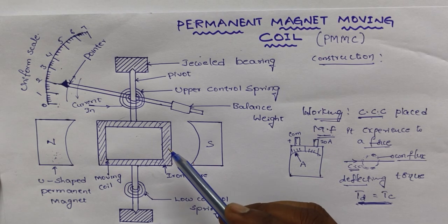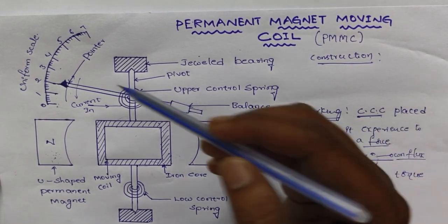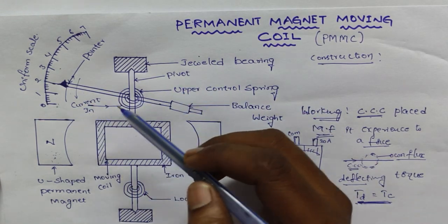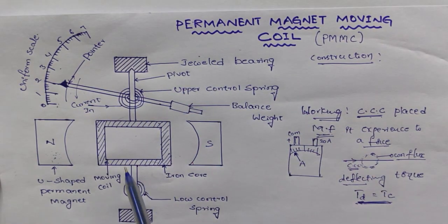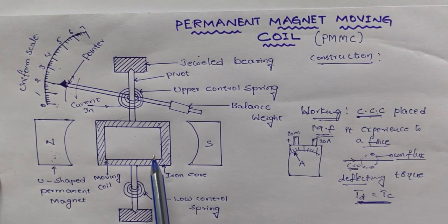Here, damping force. So, we know that damping torque removes the oscillations from pointer. Here, this damping torque is provided by movement of aluminum former in the magnetic field.